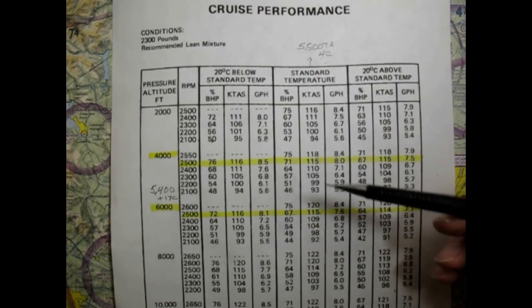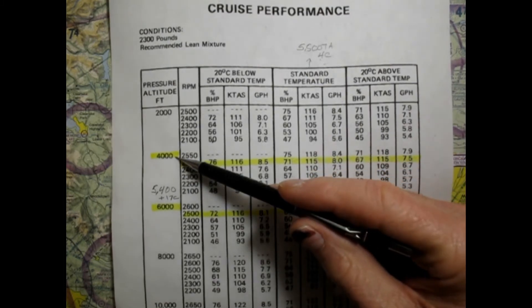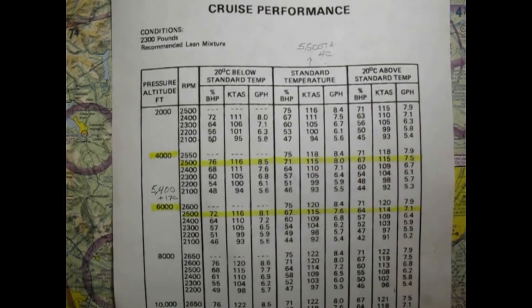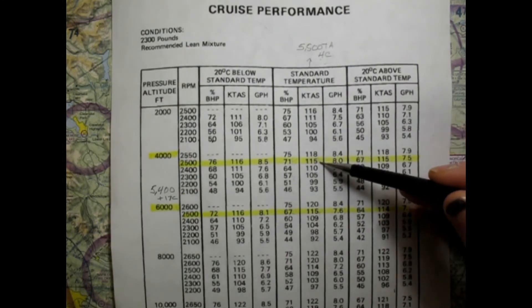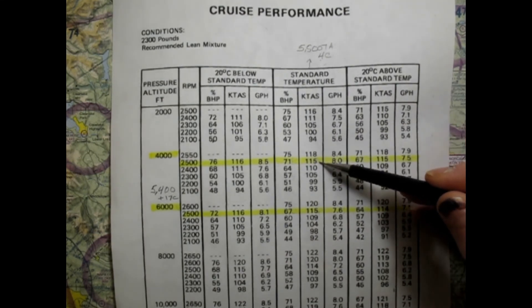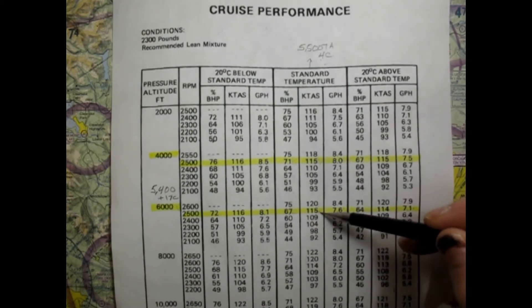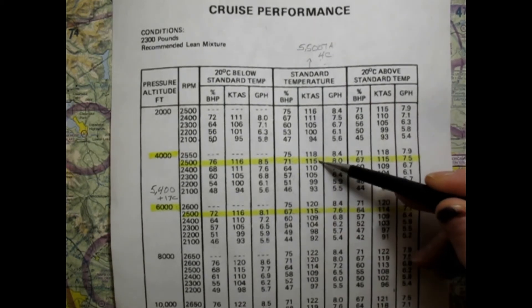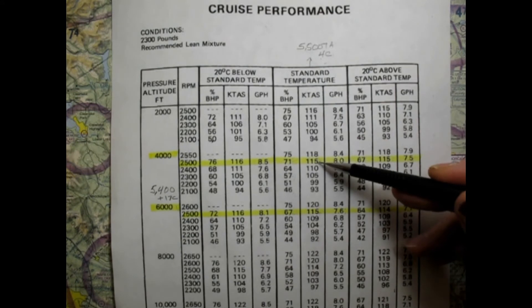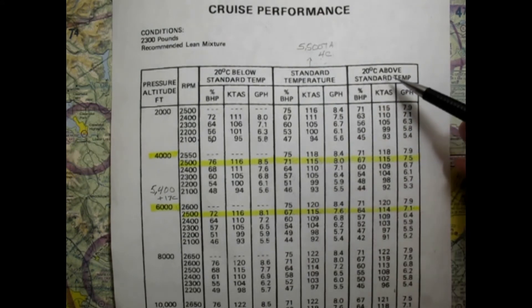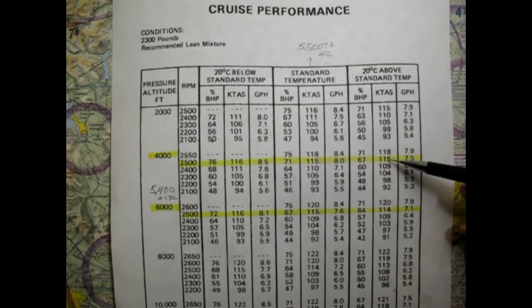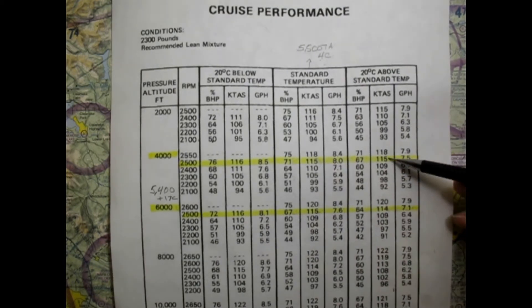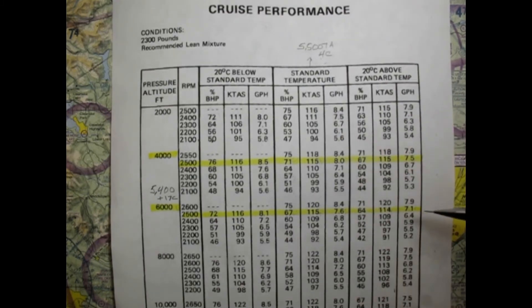Looking at the knots true airspeed column at 2,500 RPM: at both 4,000 and 6,000 feet at standard temperature, we get 115 knots true airspeed. That makes it pretty simple - we're going to select 115 knots as our true airspeed. At 20 above standard it's 115 and 114, so 115 knots is clearly our true airspeed regardless.